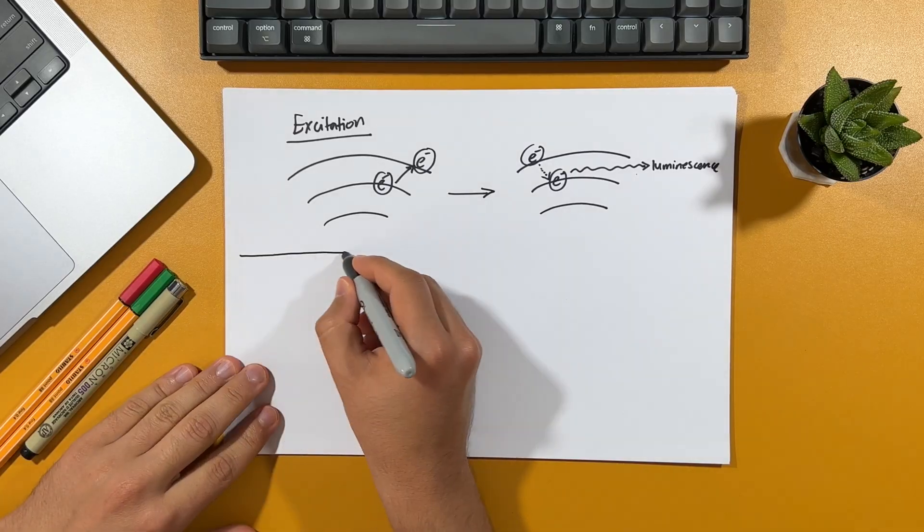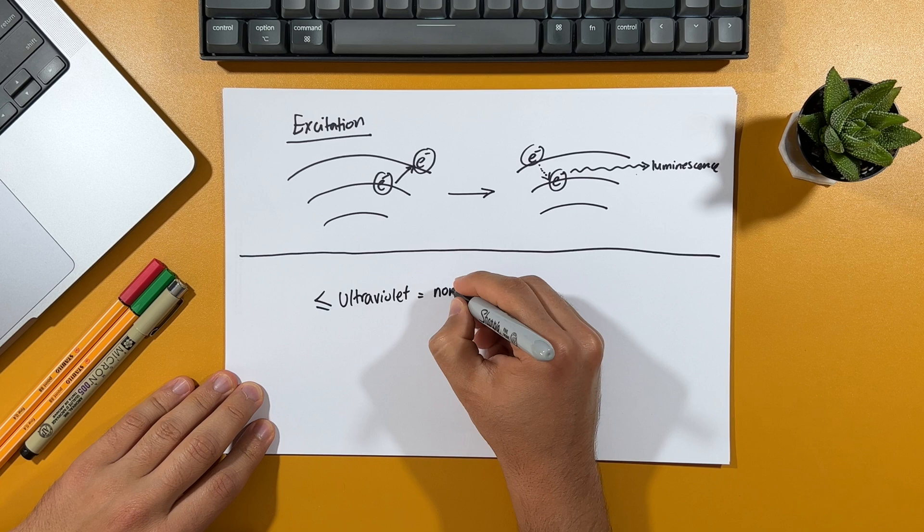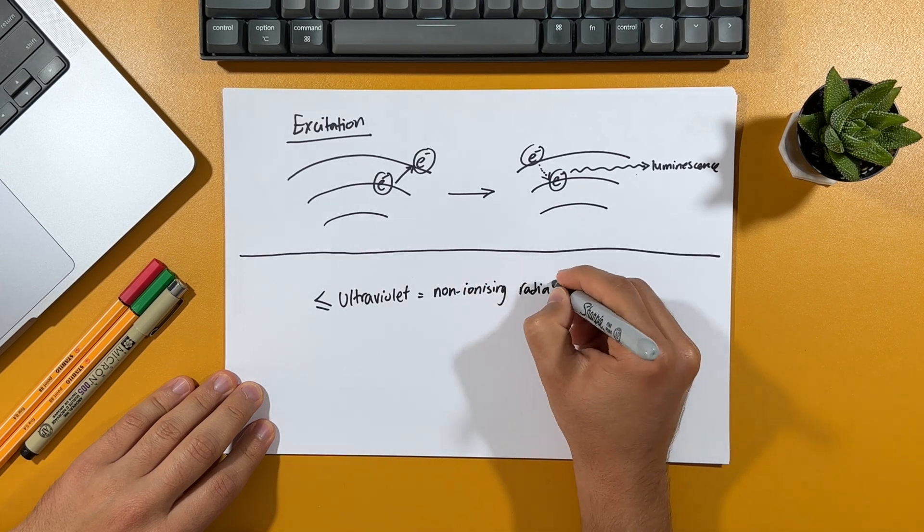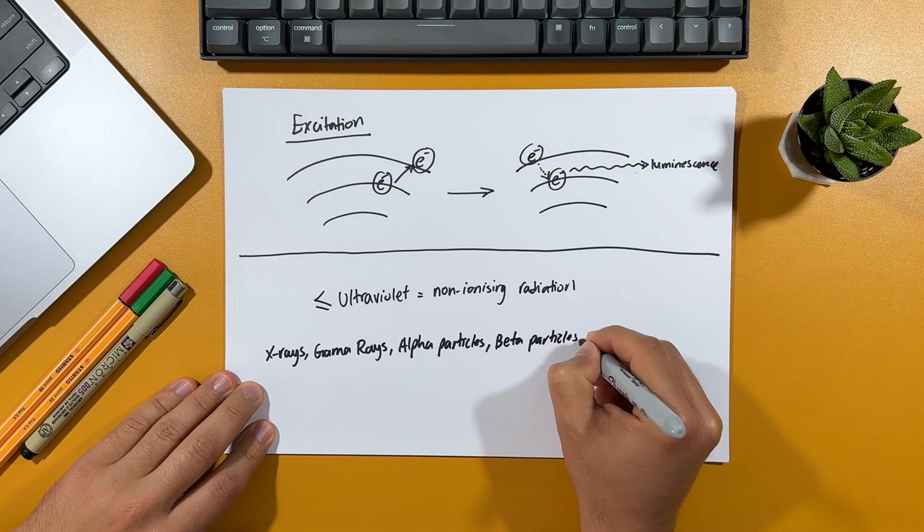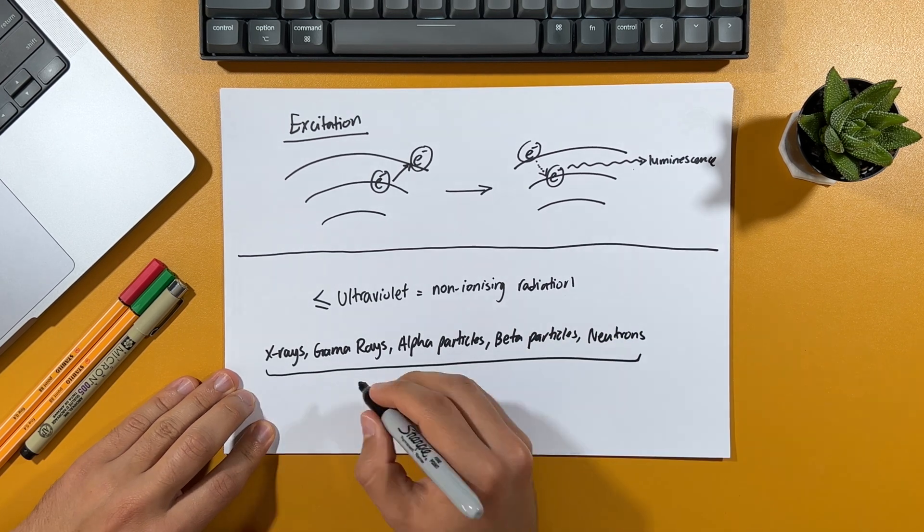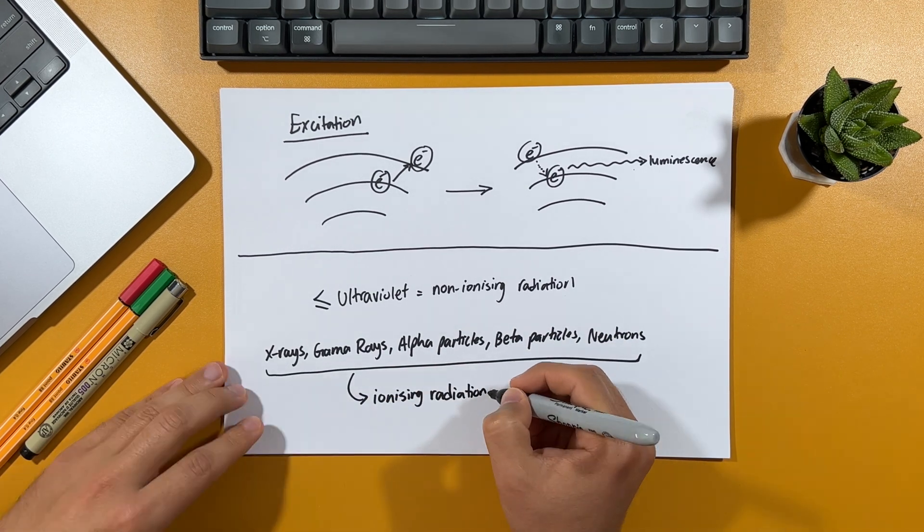Now, not all electromagnetic radiation is ionizing, but pretty much from ultraviolet or UV rays and below, they're all considered to be non-ionizing radiation. Meaning they don't have enough energy to cause an ionization event. Whereas X-rays and gamma rays are ionizing, with the addition of particulate radiation mentioned earlier, which included alpha particles, beta particles and neutrons.